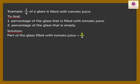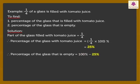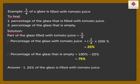We know that one-fourth of the glass is filled with tomato juice. To find the percentage of glass filled with tomato juice, we convert one-fourth into percentage to get 25%. To find the percentage of the glass that is empty, we subtract from 100% the 25%, which is equal to 75%. Thus, 25% of the glass is filled with tomato juice and 75% of the glass is empty.